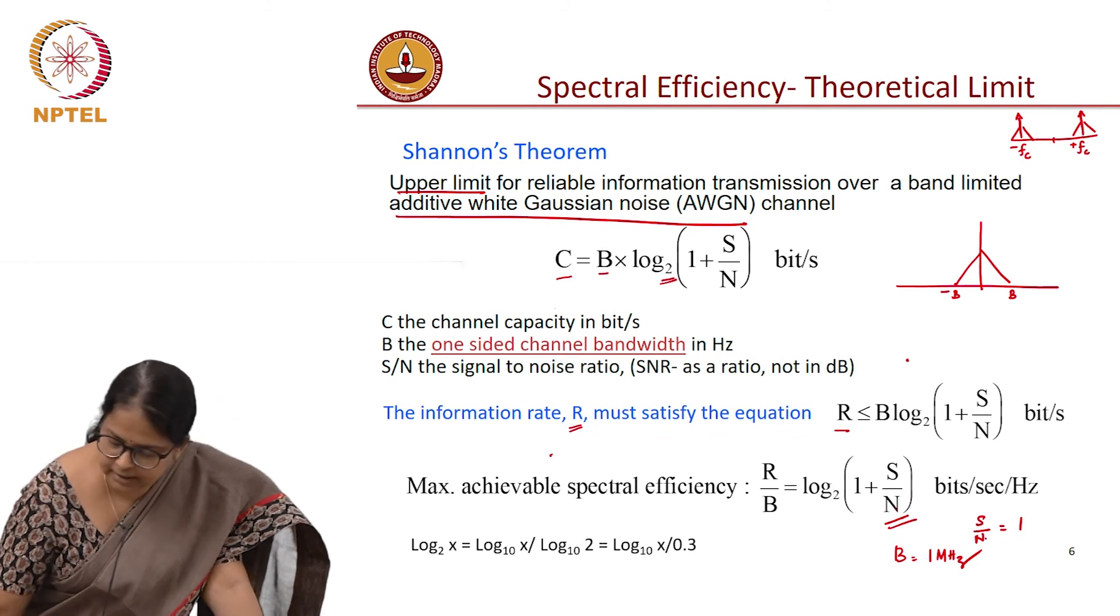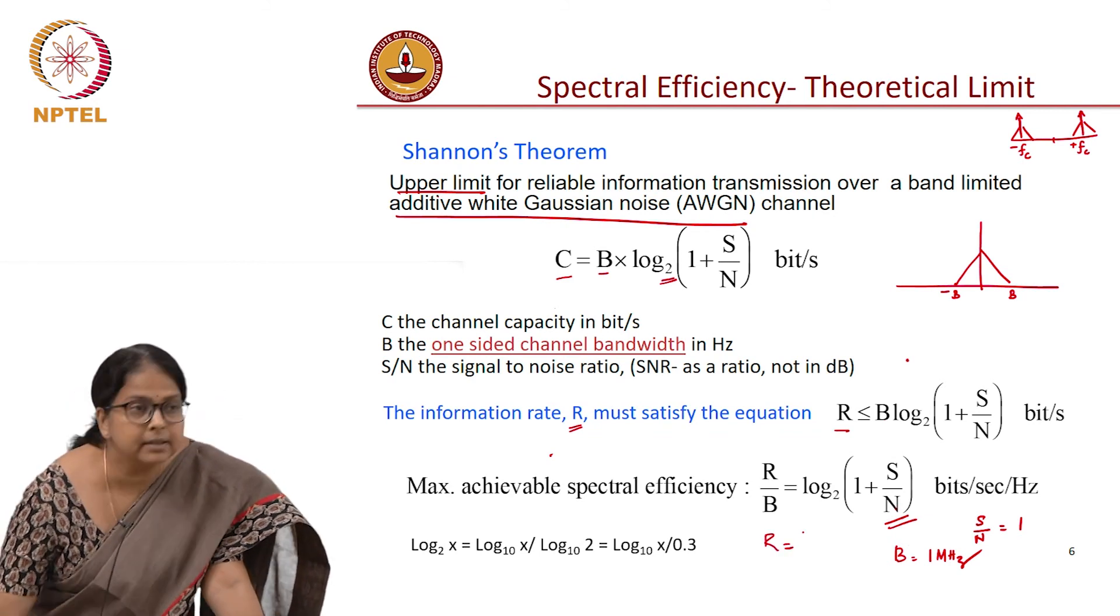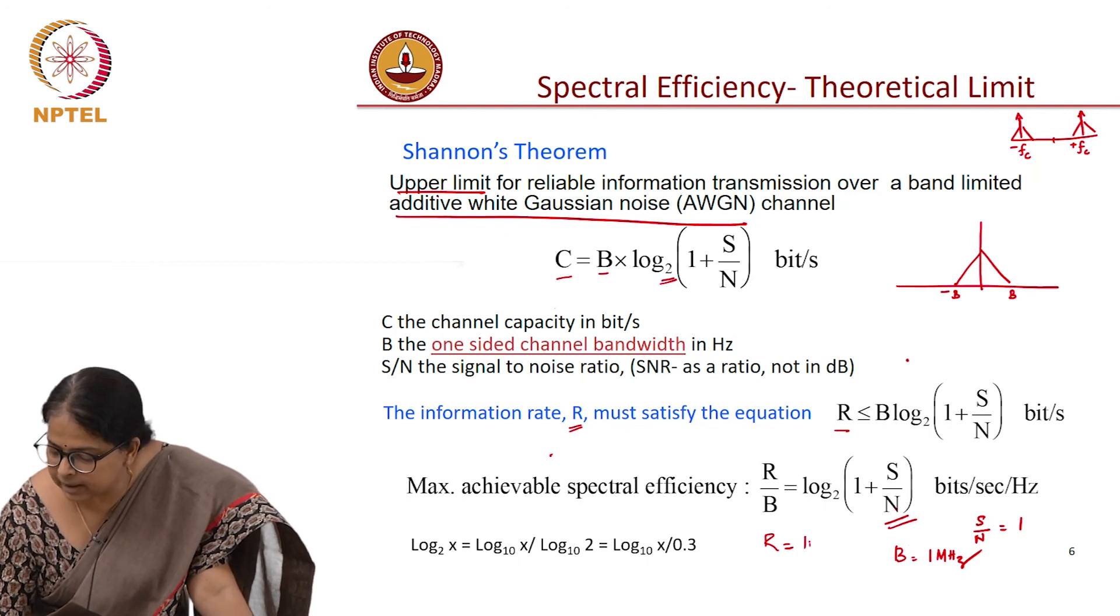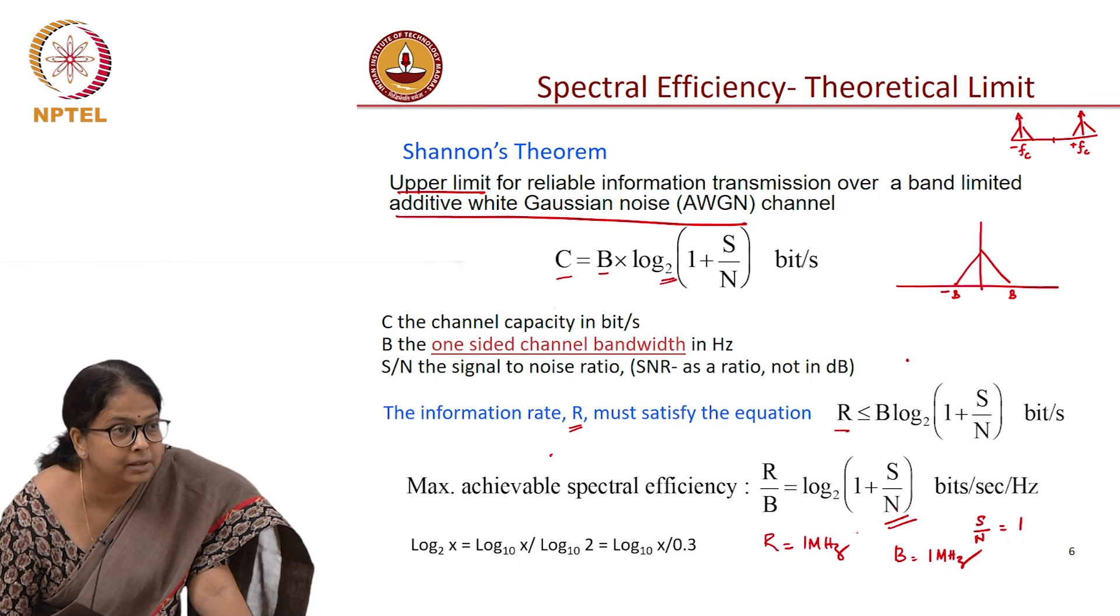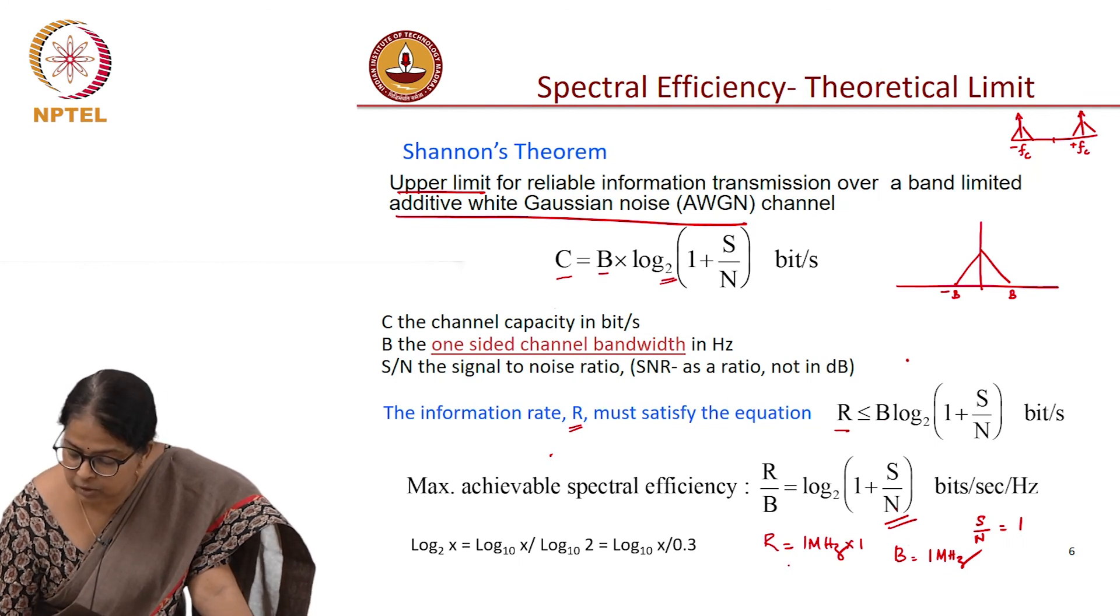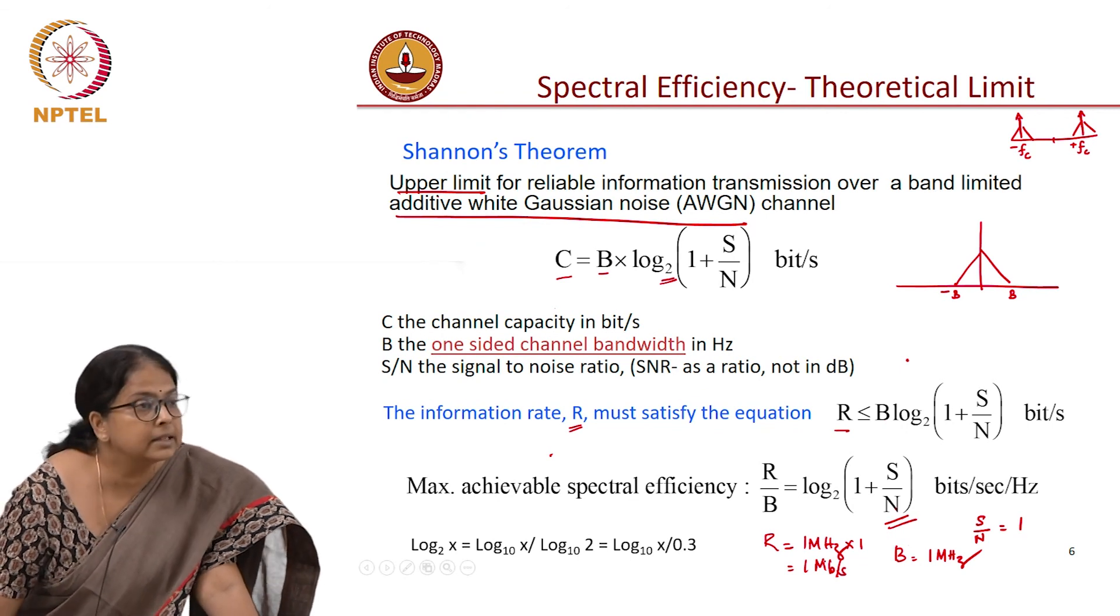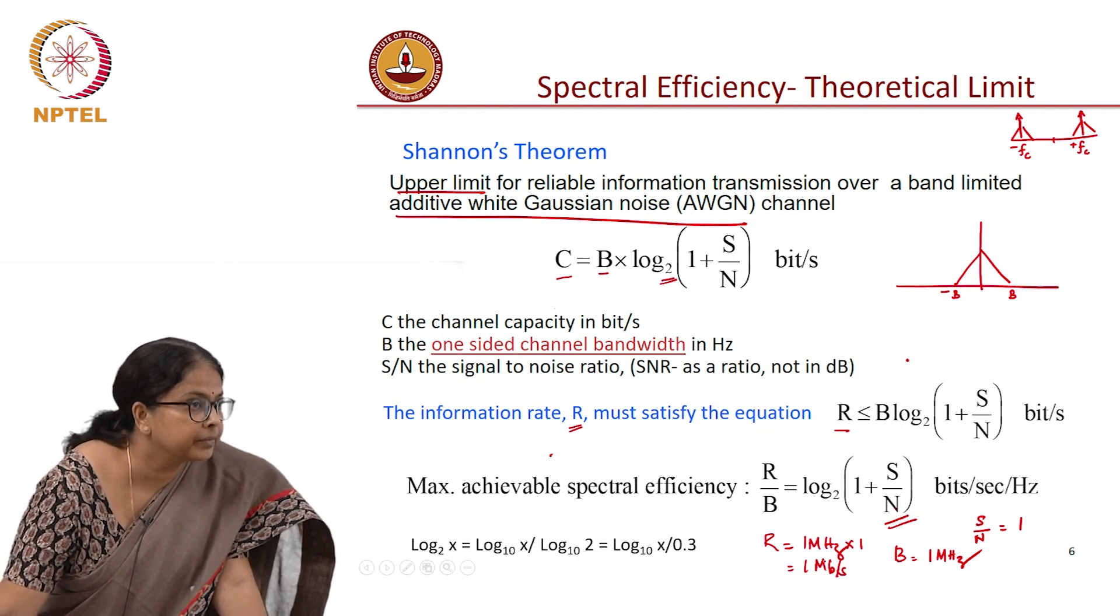In which case, what is your R? Log of bandwidth is 1 megahertz and log to the base 2 of 2 is 1, so this is 1, so this is 1 megabits per second, that is the largest information rate.